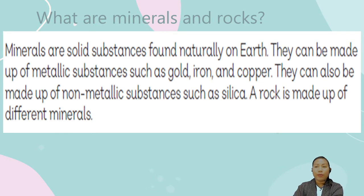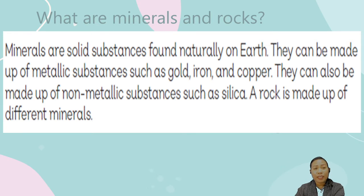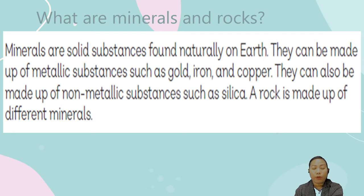What are minerals and rocks? Minerals are solid substances found naturally on earth. They can be made up of metallic substances such as gold, iron, and copper, or non-metallic substances such as silica. A rock is made of different materials. Rocks and minerals can be metallic or non-metallic.